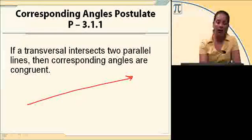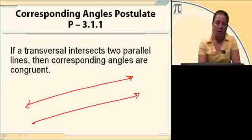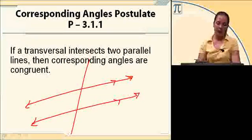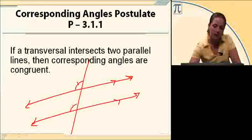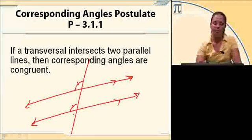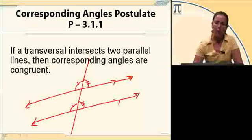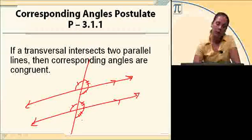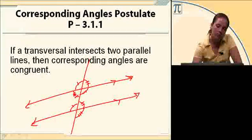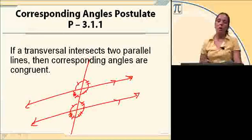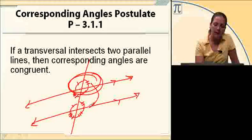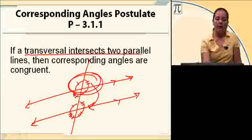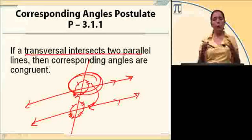If you have parallel lines cut by a transversal, then corresponding angles are congruent. That means those pairs of angles are congruent — you can take these four angles, slide them over, and they should all be congruent. All corresponding angles are congruent when you have a transversal intersecting two parallel lines.